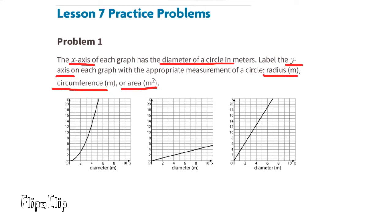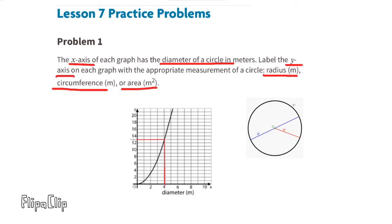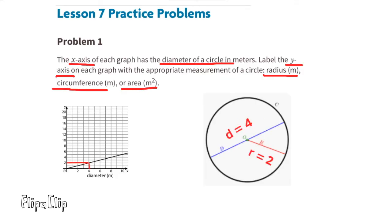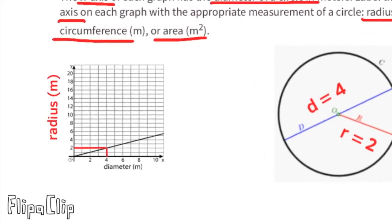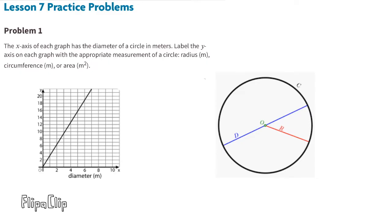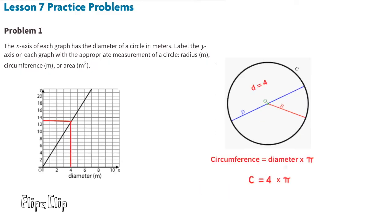The first graph shows the relationship between the diameter and area of a circle — it is not a proportional relationship. The second graph shows the relationship between the diameter and the radius — it is a proportional relationship and the constant of proportionality is one half. The third graph shows the relationship between the diameter and the circumference — it is a proportional relationship and the constant of proportionality is pi.